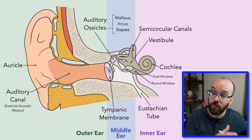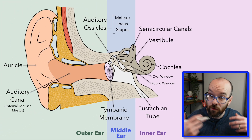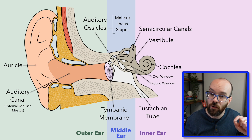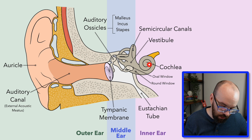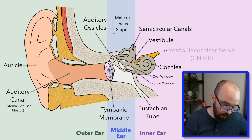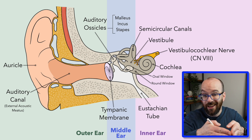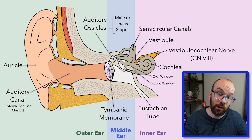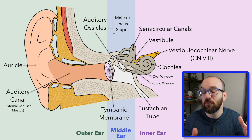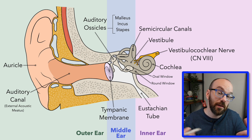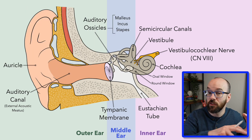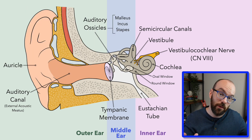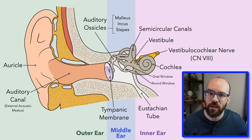To transmit signals from the semicircular canals for balance, or from the cochlea for hearing, we need nerves. We have the cochlear nerve connected to the cochlea and the vestibular nerve connected to the vestibule and semicircular canals. These converge to form the vestibulocochlear nerve, which is cranial nerve number eight. That nerve transmits signals to the brain where it interprets them as sound or balance information.